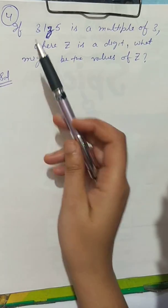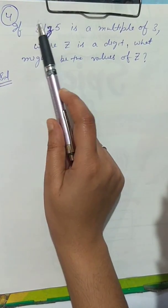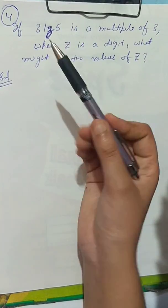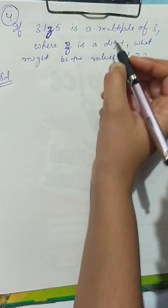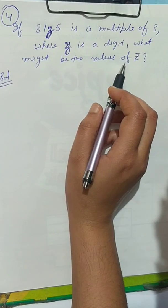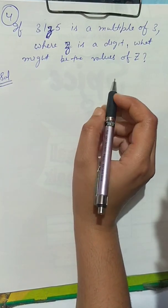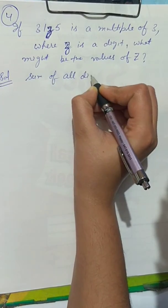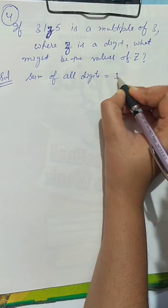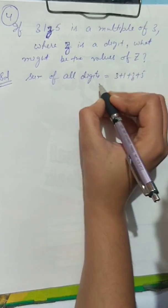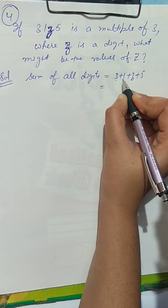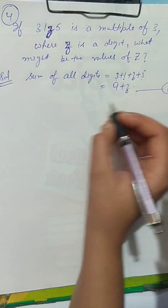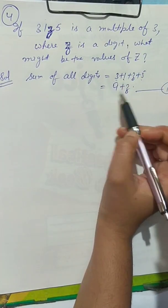Next, question number 4: if 31z5 is a multiple of 3, where z is a digit, what might be the values of z? Similar to the previous question, we find the sum of all digits: 3 + 1 + z + 5. That gives us 3 + 1 = 4, 4 + 5 = 9, so we get 9 + z.